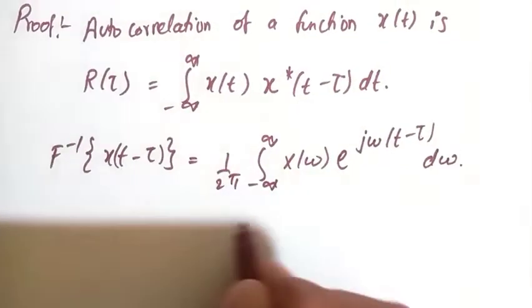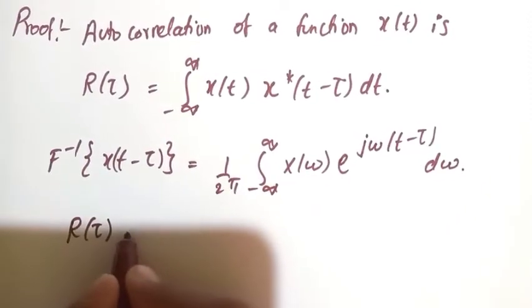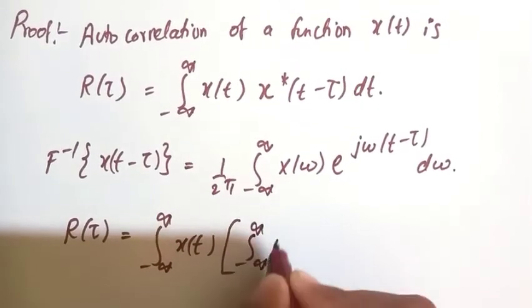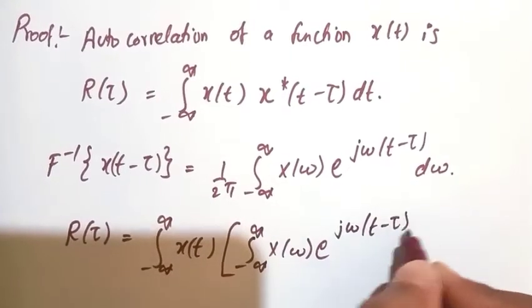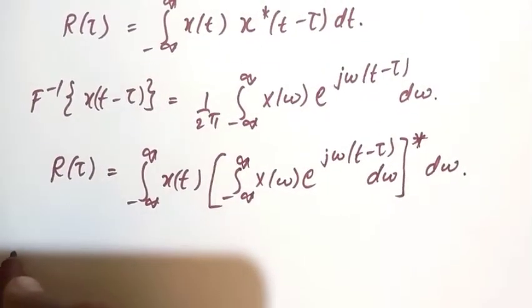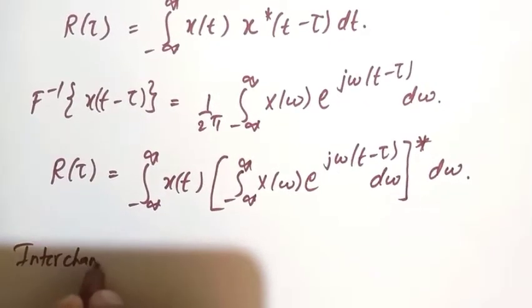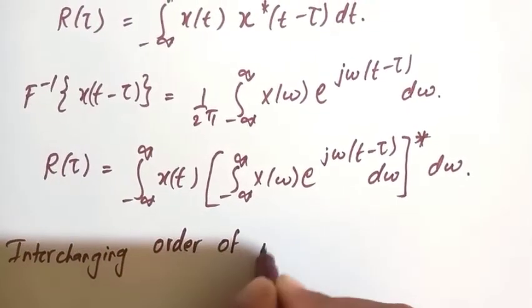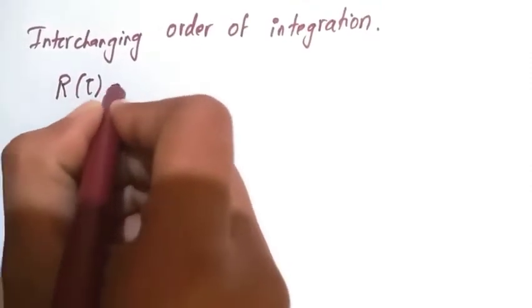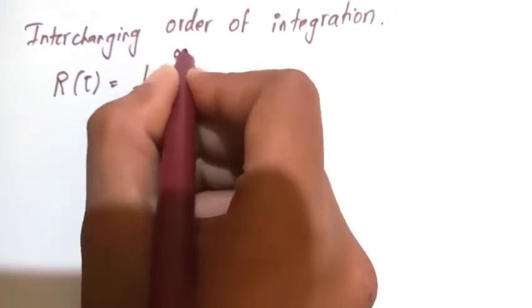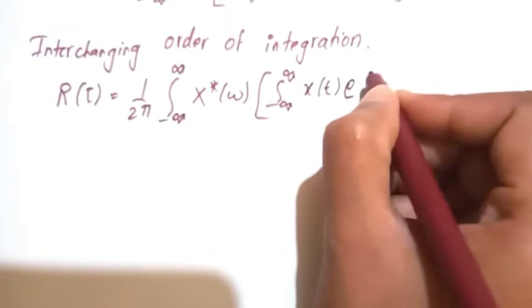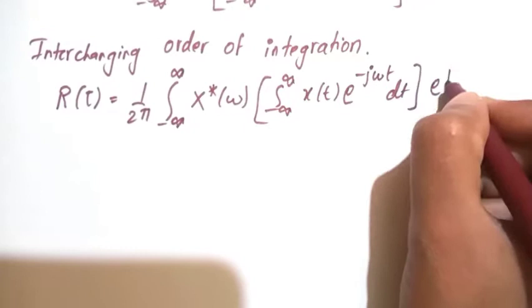Substituting this into the autocorrelation expression, R(tau) equals the integration from minus infinity to infinity of x(t) times the quantity: 1 over 2pi, integration from minus infinity to infinity of X(omega) e to the power of j*omega*(t minus tau) d-omega, with a conjugate star. Now we interchange the order of integration.